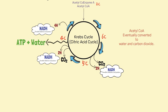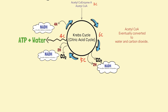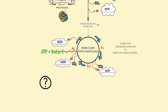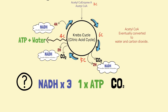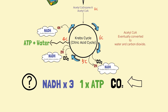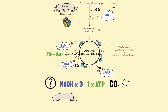What happens to the acetyl-CoA? It eventually gets converted to water and carbon dioxide — a previous exam question, so know that. The products of Krebs cycle are three NADH molecules, one ATP, and two carbon dioxide molecules.